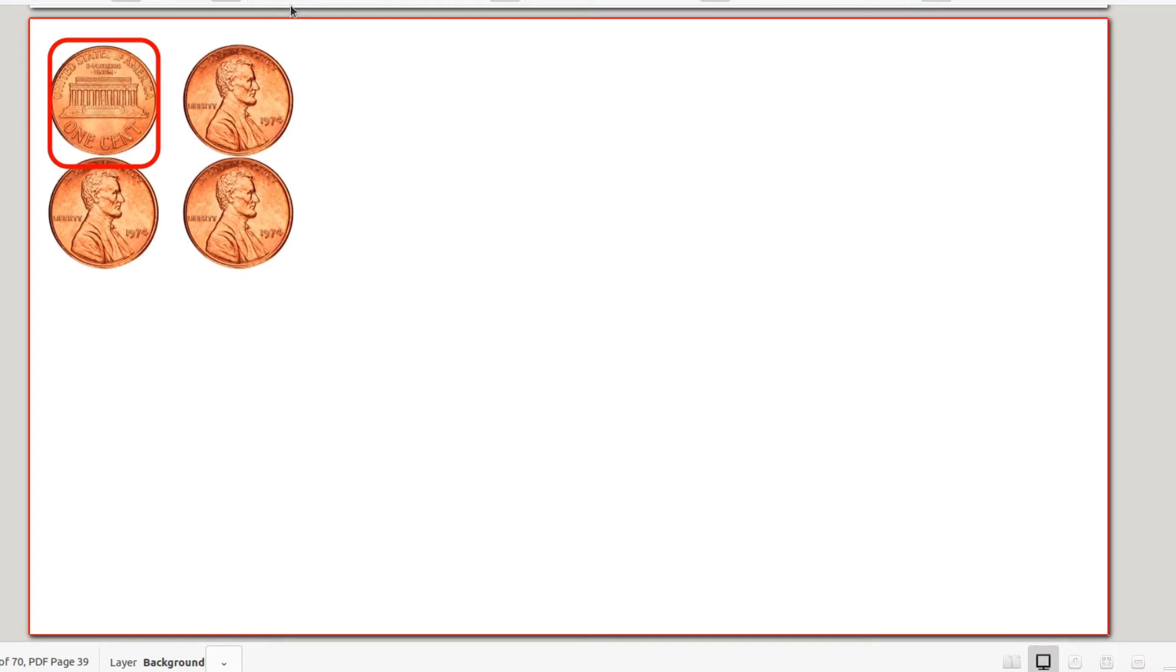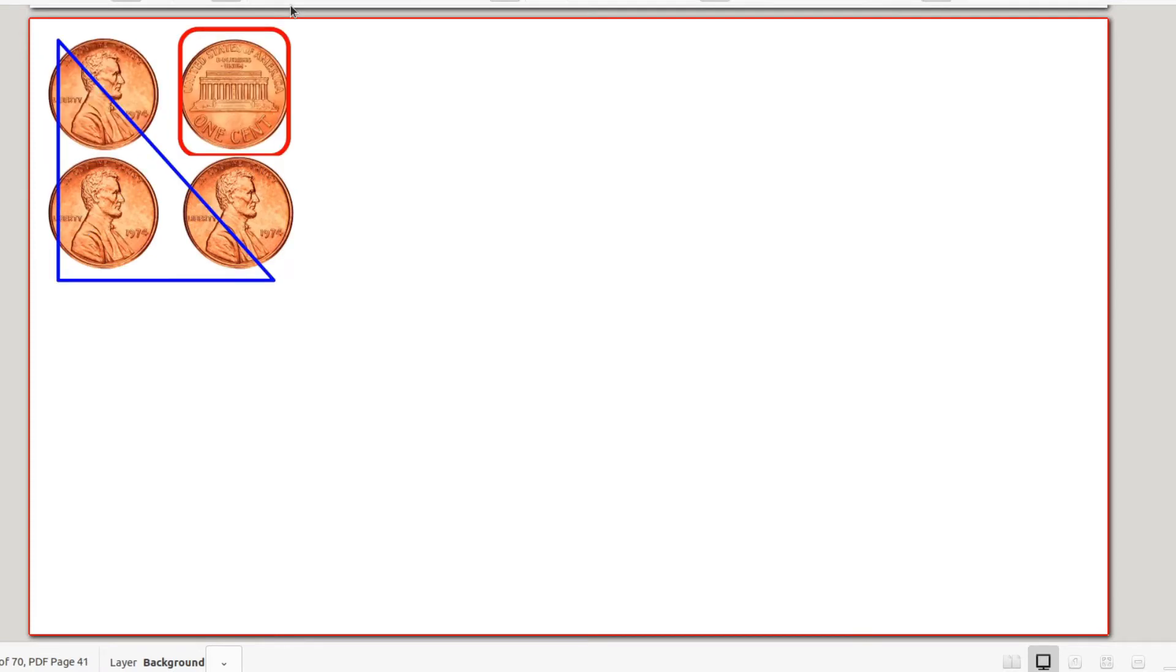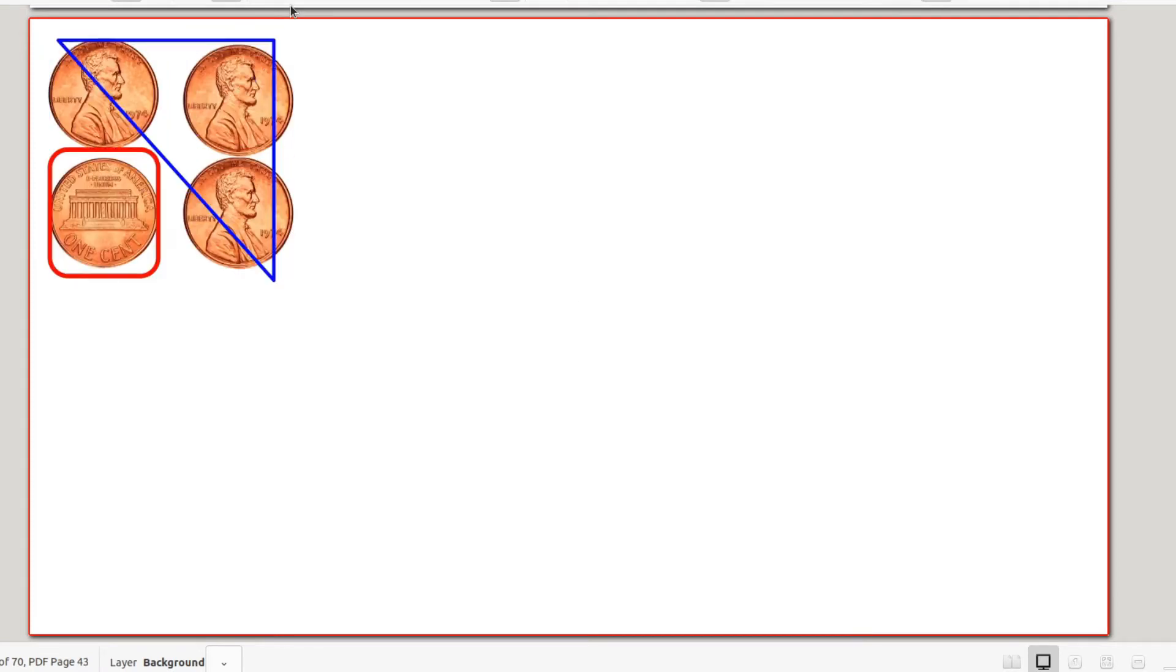Note also the symmetry of this system, that having one tail is the same as having three heads. So we've also answered the question, how many ways could I have three heads? This way, this way, this way, or this way.